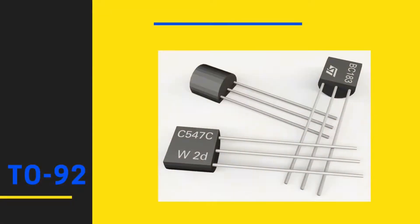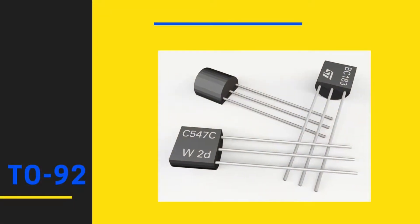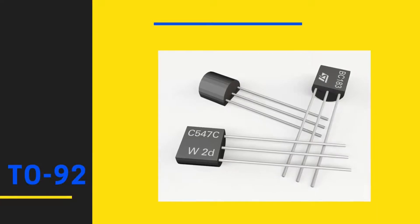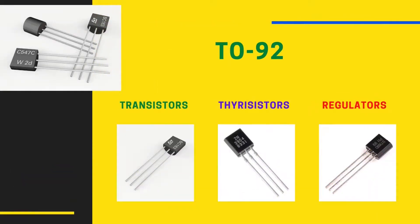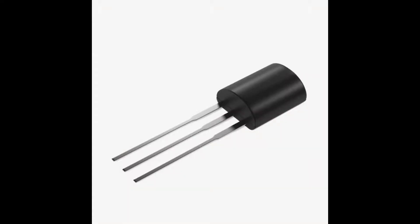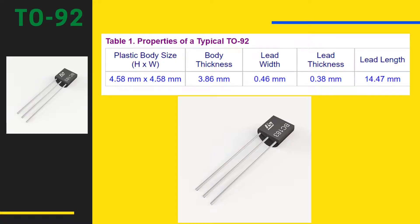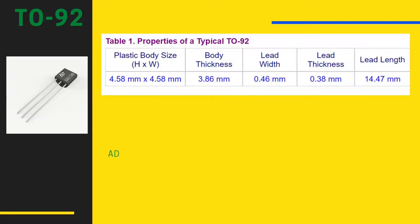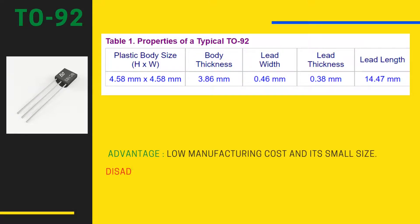The TO92 is a small type of plastic molded package commonly used for housing discrete devices such as transistors and thyristors, as well as ICs with low lead counts such as voltage regulators. The TO92 has a flat front face marked with the device name or number, while its back is semi-circular in shape. The typical distance between leads is 1.27 mm. Its main advantages are low manufacturing cost and small size; however, the TO92 is not designed to dissipate much heat and cannot be used on high power consumption devices.